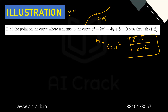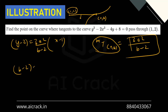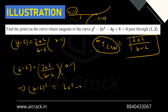Writing the tangent through (1, 2): y - 2 = [3a²/(b - 2)] × (x - 1). Since (a, b) lies on this tangent: b - 2 = [3a²/(b - 2)] × (a - 1), which gives (b - 2)² = 3a²(a - 1). This is our first equation.